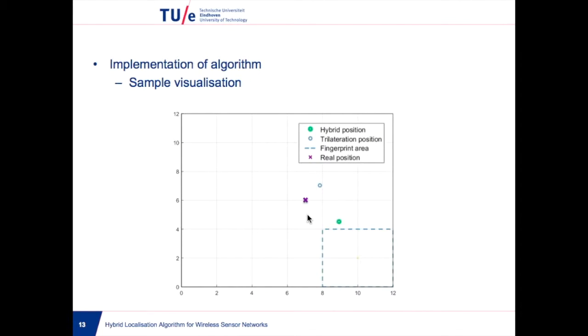To show how the algorithm works, we place a mobile node at coordinate 7,6, the purple mark. By comparing with the fingerprint database, it locates the node at the lower right corner of the grid.